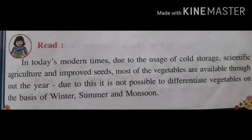Next, due to these advancements, it is not possible to differentiate vegetables on the basis of winter, summer, and monsoon. This is why it is difficult to differentiate vegetables according to season, because we have a lot of vegetables available without seasonal restriction. And after summer, we can also enjoy the taste of mango. So there are many reasons why we can use so many vegetables throughout the year.